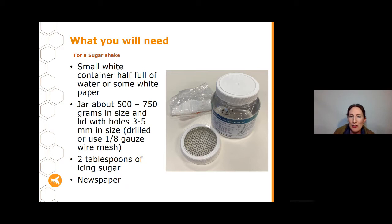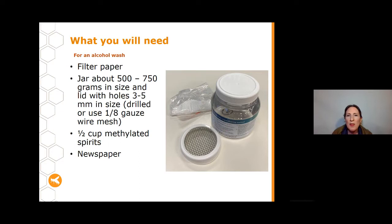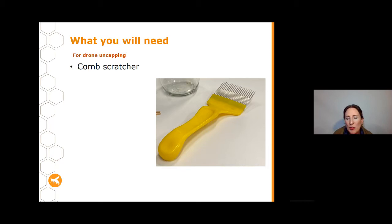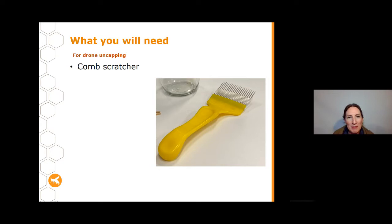For an alcohol wash, you want that same jar with the two different lids, a piece of filter paper — tissue paper works in a pinch but filter paper is much better — and half a cup of methylated spirits, which can be reused. For a drone uncapping, you'll need a capping scratcher or honey scratcher, available at any beekeeping supplies store. For any of these methods, I'd strongly suggest investing in a magnifying glass, because what we're looking for are really tiny little dots and telling the difference between a mite and a piece of dirt is very tricky without one.